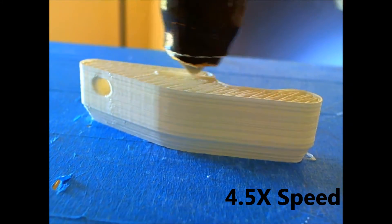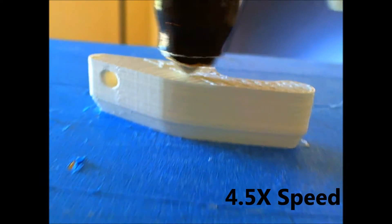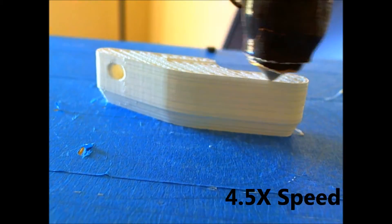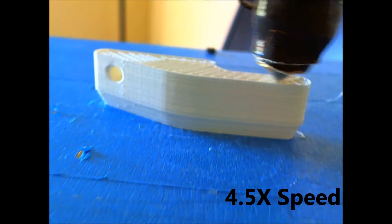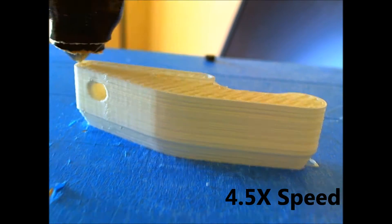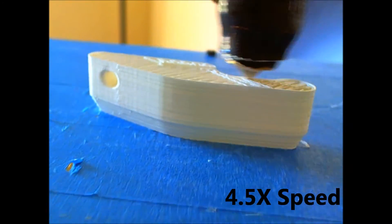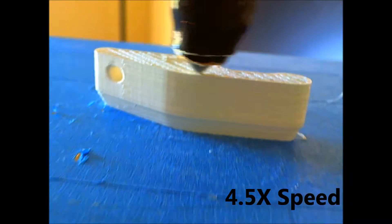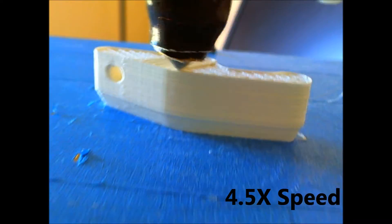The team are now working on version 2 of the RepRap machine. Version 2 will, of course, be printed by version 1, as well as being able to print itself. Version 2 will allow a wider range of materials to be printed, including electrical conductors, so that the machine can make its own circuit boards and other electrical products.